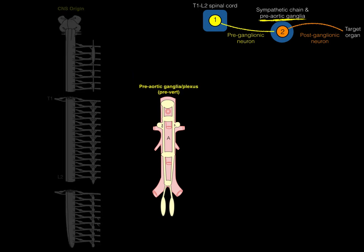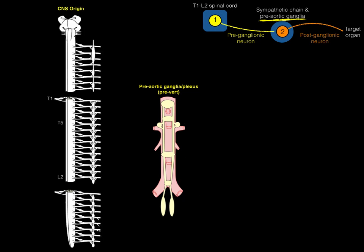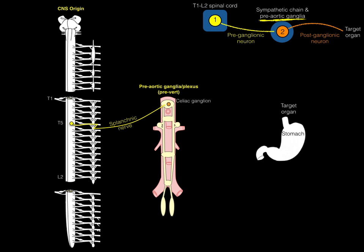The preaortic ganglia have specific names, usually named after nearby arteries: the celiac ganglion around the celiac artery, the superior mesenteric ganglion around the superior mesenteric artery, the aorticorenal ganglion where the aorta and renal arteries branch, the inferior mesenteric ganglion by the inferior mesenteric artery, and inferiorly the superior hypogastric plexus, hypogastric nerve, and inferior hypogastric plexus. To trace an example: a preganglionic sympathetic neuron in the lateral horn of T5 sends its axon through the sympathetic chain via the splanchnic nerve, synapses in the celiac ganglion, and sends its axon out to the stomach.